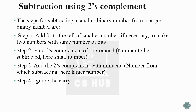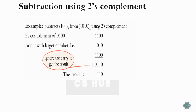After adding, if there is a carry out, we simply ignore and remove that carry — unlike one's complement where we add the carry back. For example, subtracting 0100 from 1010 using two's complement: find the two's complement of 0100, add it to 1010, get a result with an extra carry bit, and remove the carry. The remaining bits are the answer.